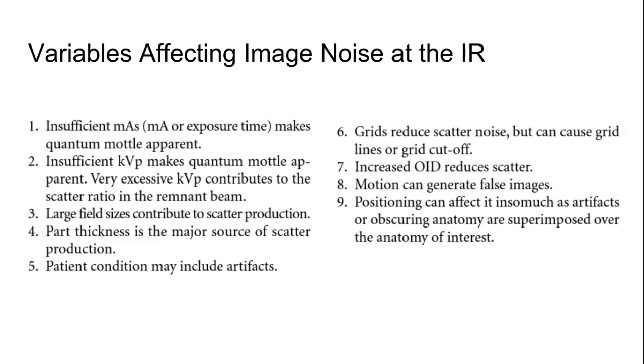How about number two? Insufficient KVP, which makes quantum mottle apparent. That is true. If we don't have enough KV, again, we're not going to get enough photons making it to the remnant beam and then to the image receptor. And again, you're not going to have enough data to utilize when the computer is doing its reconstruction. Now, excessive KV is going to also create noise in the form of scatter. So that's very excessive KV.